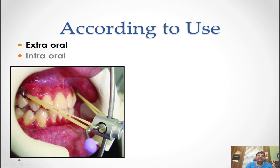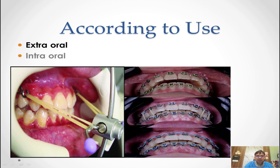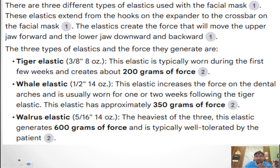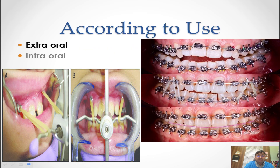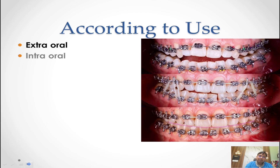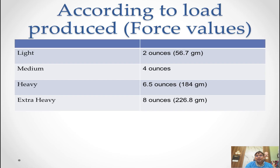According to the use, there are two types of elastics: extraoral and intraoral. In the extraoral, the force level is very high. The force used for orthopedic corrections — like for the protraction of the maxilla — is 14-ounce elastic force, used to bring the maxilla forward by the face mask. For intraoral elastics for settling the occlusion, we use light forces.